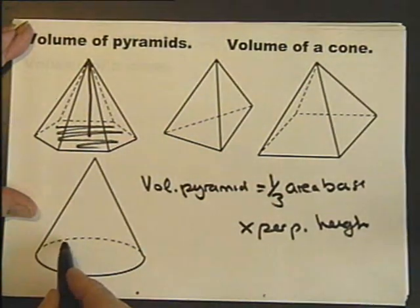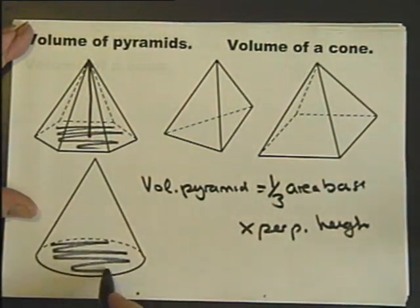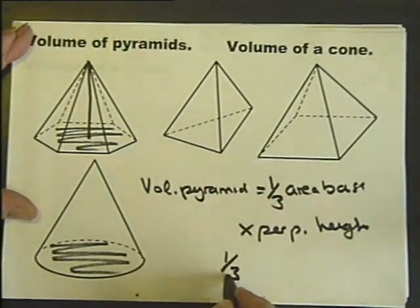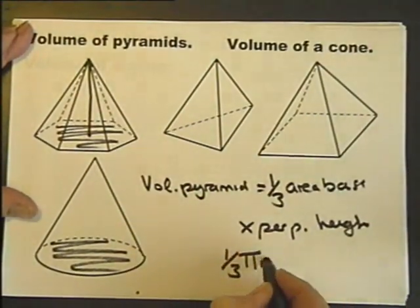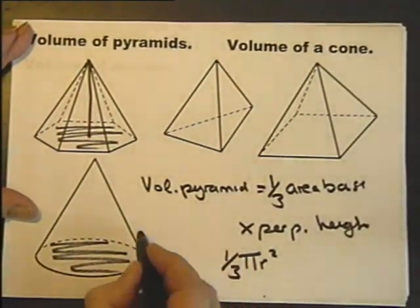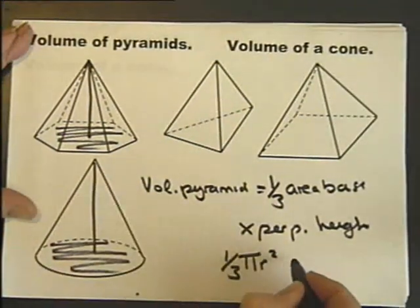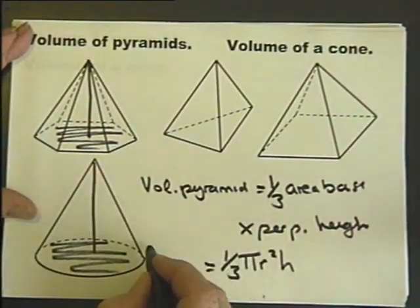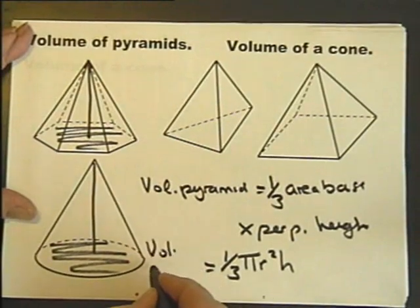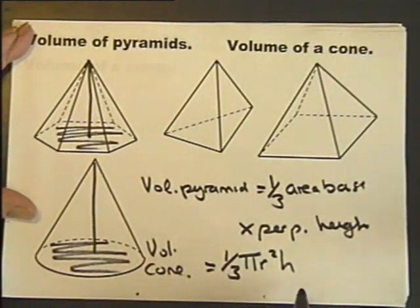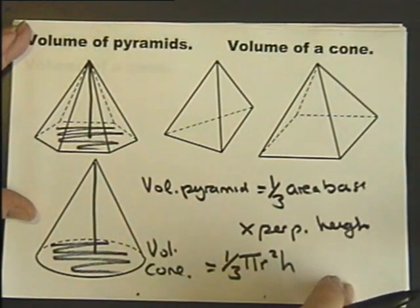The cone is exactly the same, it's a third, the area of the base, which just happens to be a circle, multiplied by the perpendicular height. So that's what you'll see as the volume of a cone formula. But it's all part and parcel of pyramids.